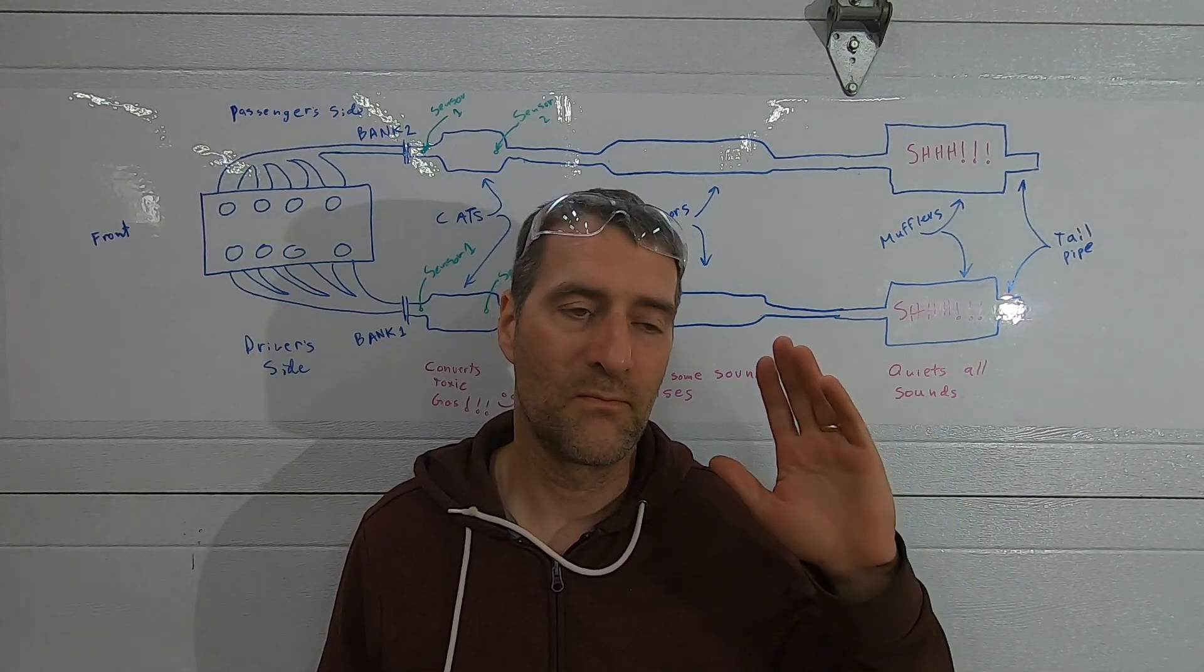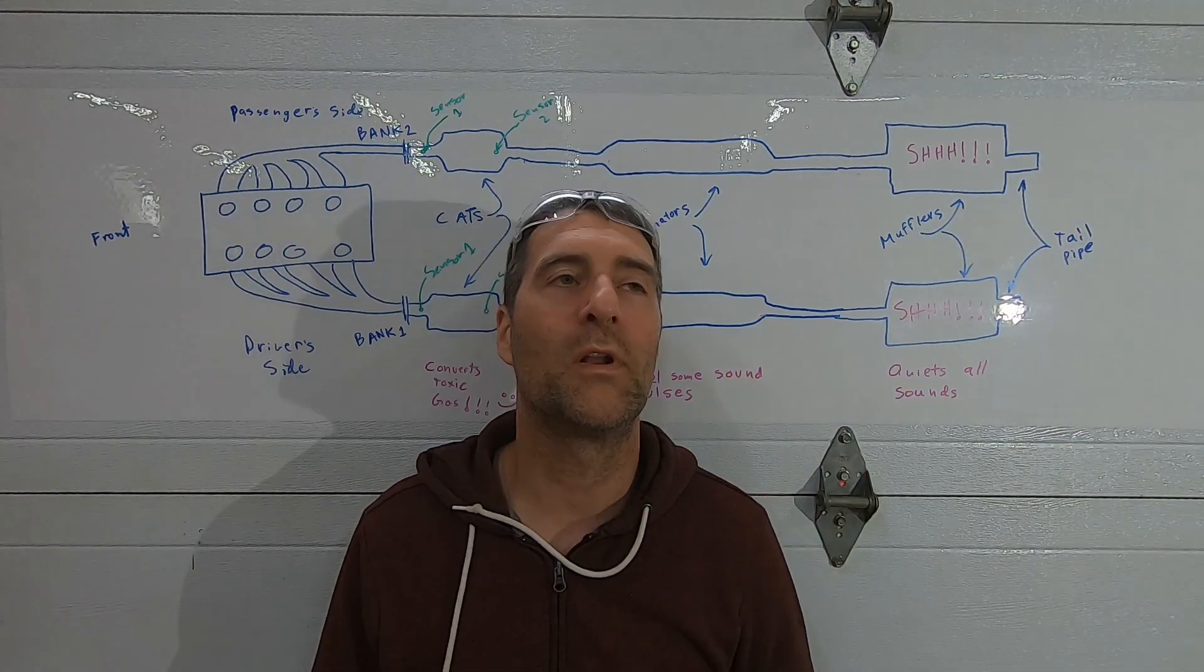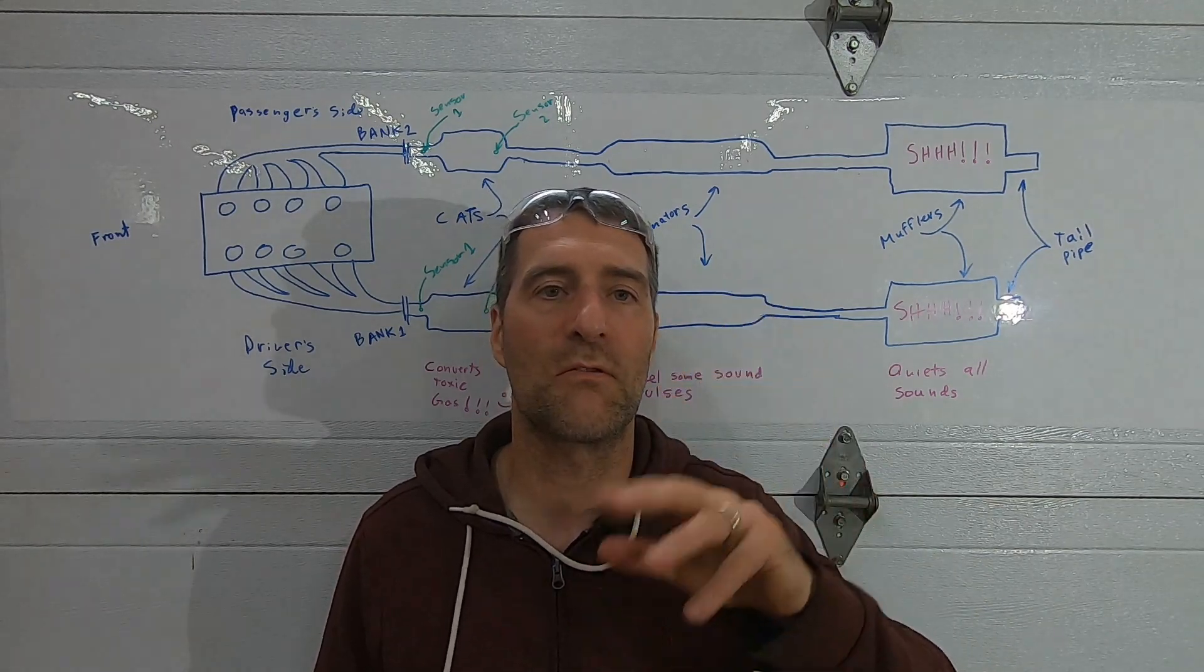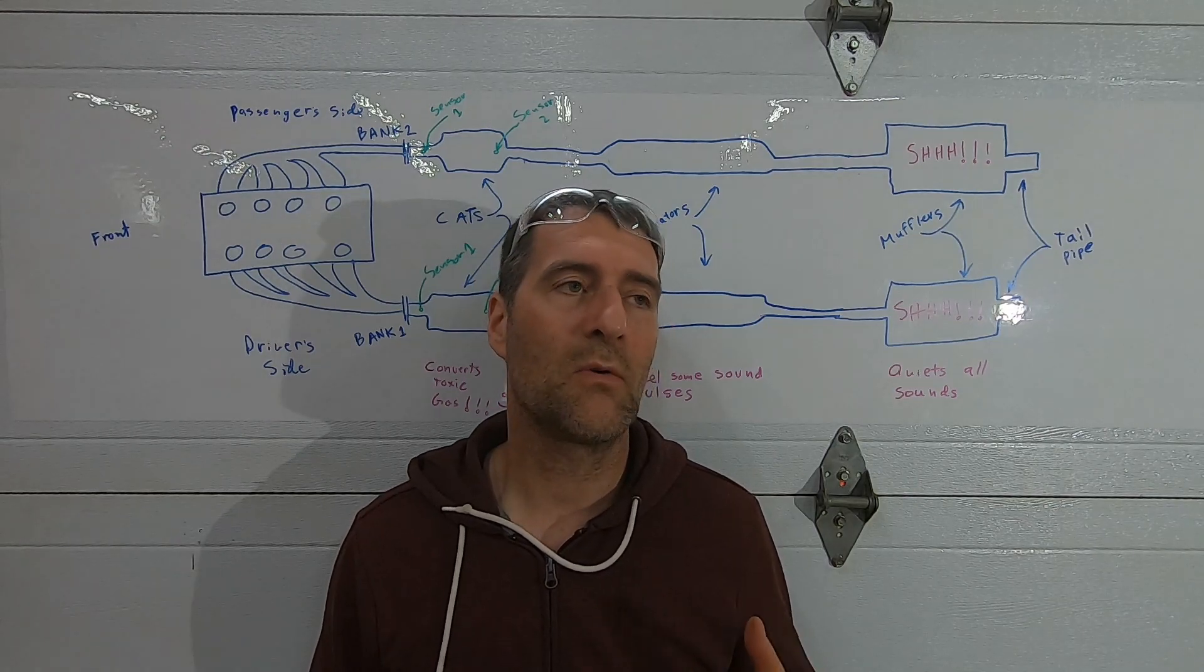So you can do those tests between the cat and resonator and resonator and muffler. When you're done that, you either have to weld up the hole or if you don't have a welder you can put a self tapping screw in there and it's probably never gonna back out and probably will never leak.